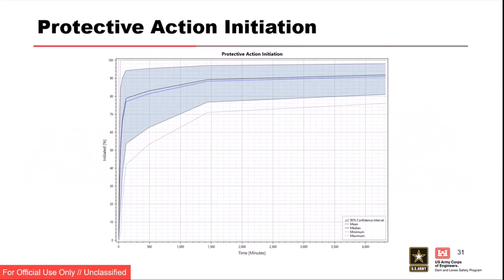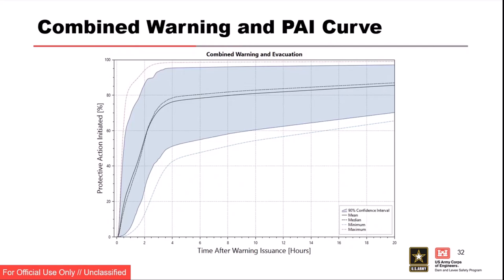This is an example of a protective action response curve — again, we're sampling a fair amount of uncertainty. In LifeSim, there are quite a few available in our default suite of curves. If we go through the warning and evacuation elicitation, we update those curves using the scoring sheet. One thing Woody added a couple of years ago that's really useful is the combined warning and PAI curve. So we're sampling all these different curves and when you combine them together, you can see the full range. You can say at two hours, somewhere between 25% to 30% and 85% of people will evacuate — that's a problem showing the range of uncertainty.